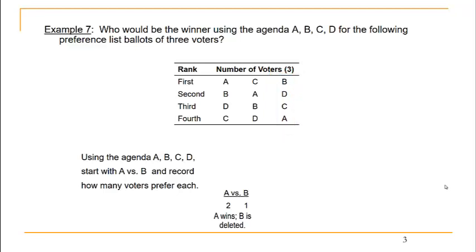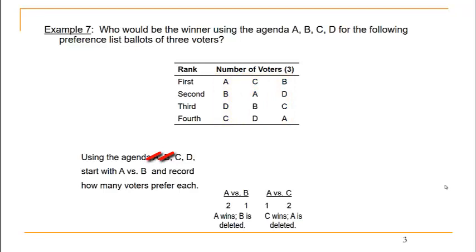A wins that head-to-head matchup and candidate B is deleted. Moving on, the next head-to-head is A versus C. Looking at the voters' preference lists, only one voter prefers A to C whereas two voters prefer C to A, so C wins this head-to-head and candidate A is deleted.